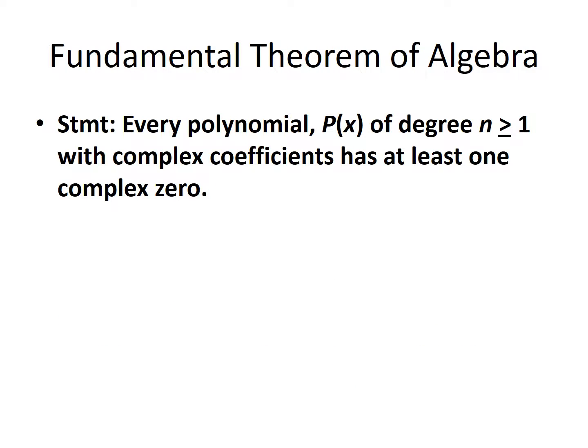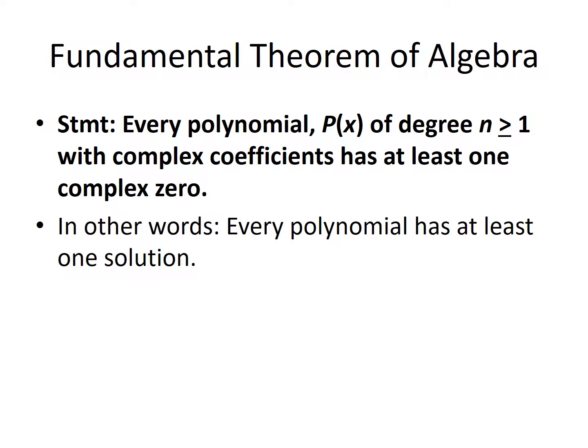The fundamental theorem of algebra states that every polynomial p of x of degree n greater than or equal to 1 with complex coefficients has at least one complex zero. In other words, every polynomial has at least one solution. This statement has been proven: every polynomial, so long as the degree is greater than or equal to 1, has a solution in the complex number system.